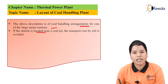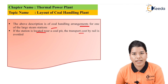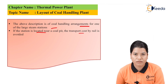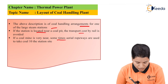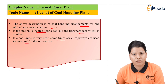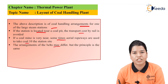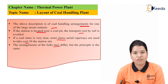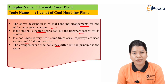If the station is located near the coal pit, the transport cost by rail is reduced, but mostly this is not possible in all cases. The plant can be located far away from the coal pit, so transportation charges will be added. If a coal mine is very near, sometimes aerial ropeways are used to take coal to the station. The arrangement of the belts may differ, but the principle used is the same. In this way, we have studied the layout of the coal handling plant. Thank you friends for watching this video. Stay tuned with eKida and do subscribe to our channel eKida.